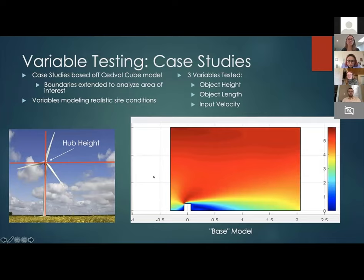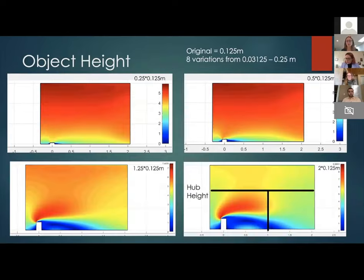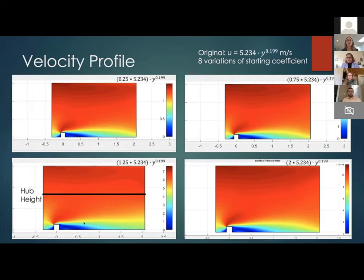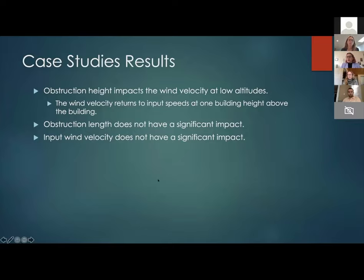First we did three case studies. These case studies were based off the Sedville cube model. We measured the height, so we varied the height of the object, the length of the object, and then the velocity that we input into the model. To sum up our results of the case studies, the obstruction height impacts the wind velocities at low altitudes. But the wind velocity returns to input speeds at one building height above the building. Both the obstruction length and the input wind velocity do not have a significant impact.